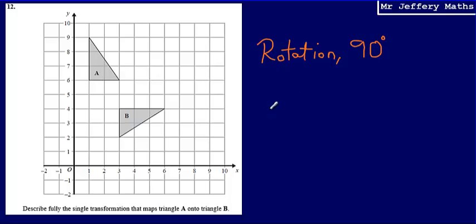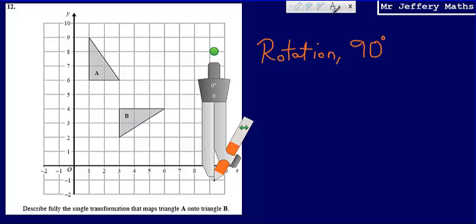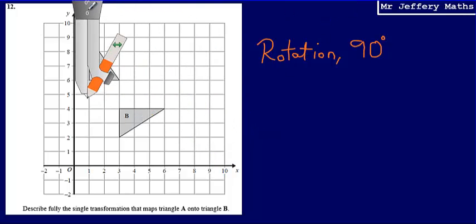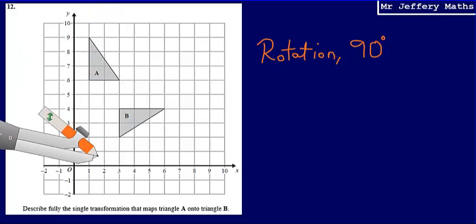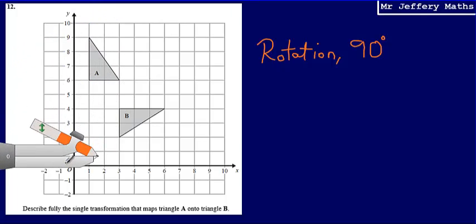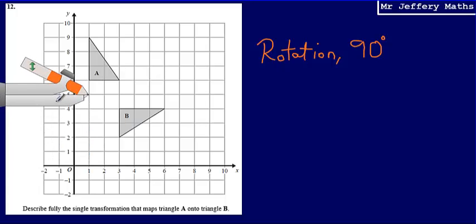The final point that we need to make is what the centre of rotation is. So where has it been rotated from? To do this, you can use a compass. And what I'm going to do here is just place my compass on some different points. So if I place my compass on that point there,